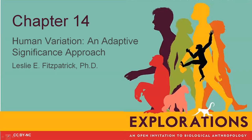Welcome back to physical anthropology. In the last chapter, we introduced you to the concept of human variation and the idea of populations rather than races. In chapter 14, we're going to look at human variation from an adaptive significance approach.